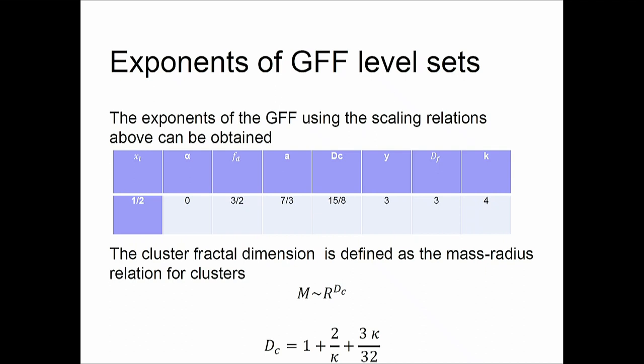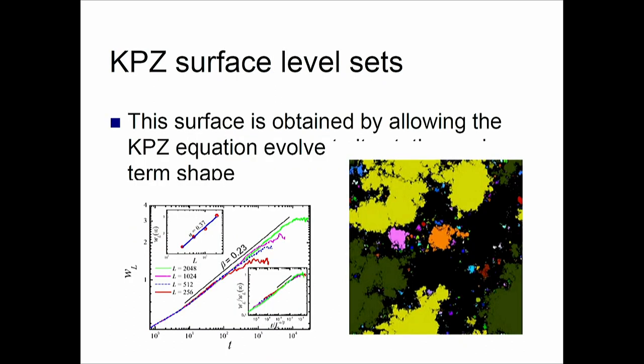I can also connect the mass of a cluster to its radius by some other fractal dimension, and it has a specific relation. So lots of things can be done in this way. The problem close to my heart is: what is the KPZ surface? First, what is the KPZ equation?